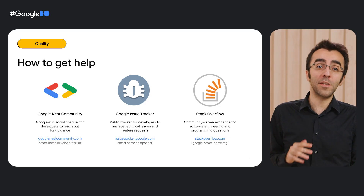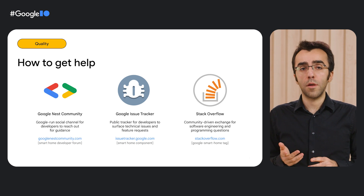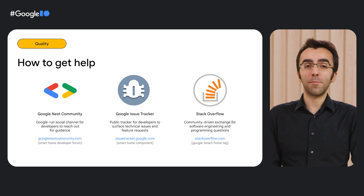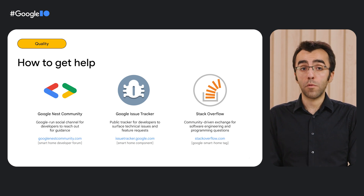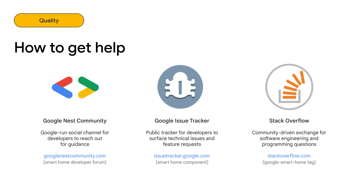Sometimes the documentation is not enough, so where do you ask for help? As the smart home team at Google, we recommend three channels to reach out for help from the community. We created a smart home developer forum within the Google Nest community about a year ago for you to reach out with any development questions. We also have the Google Issue Tracker for you to file bugs as well as feature requests on our ecosystem. And finally, we monitor the Google smart home tag on Stack Overflow from time to time, so feel free to send your implementation questions there as well.